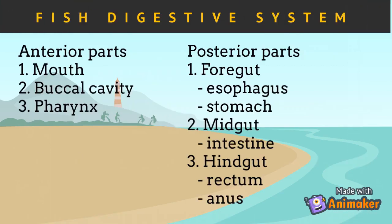The anterior parts of the fish digestive system include the mouth, buccal cavity, and pharynx. The posterior parts include the foregut, which has the esophagus and stomach; the midgut, which is the intestines; and the hindgut, which is the rectum and anus.